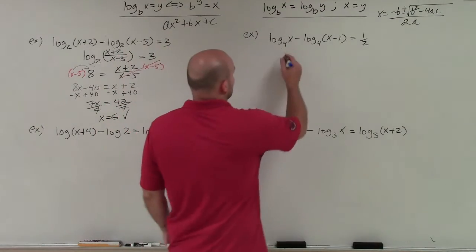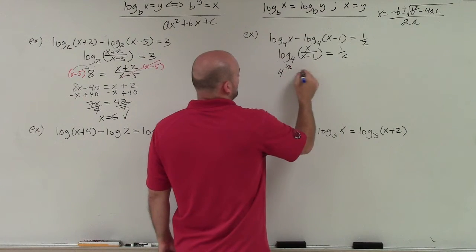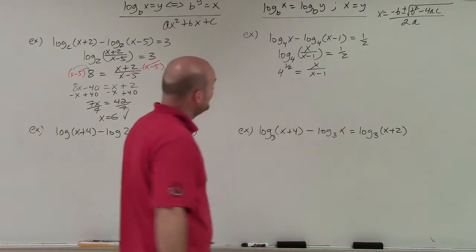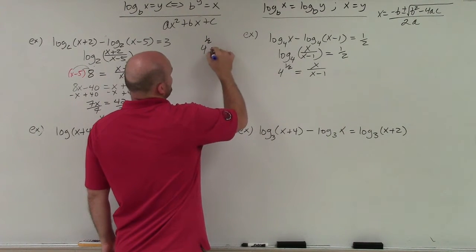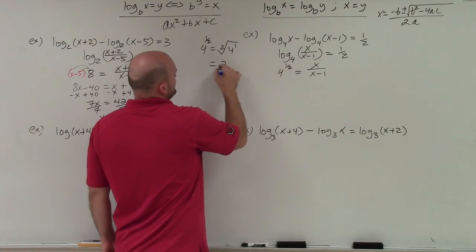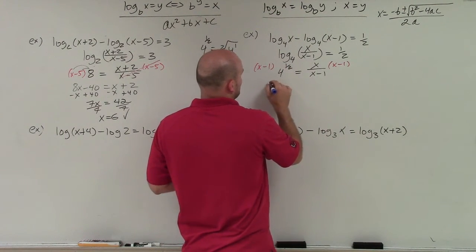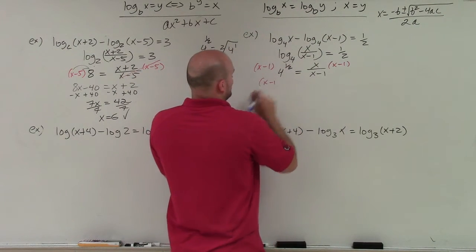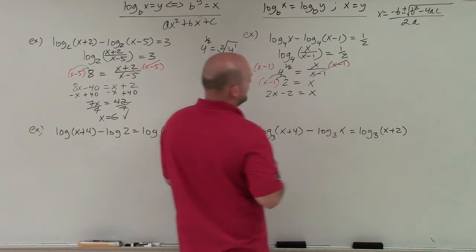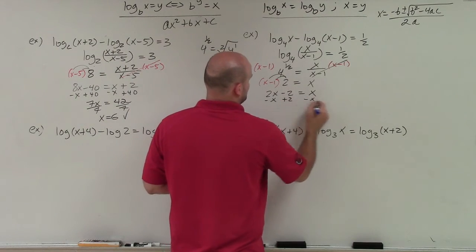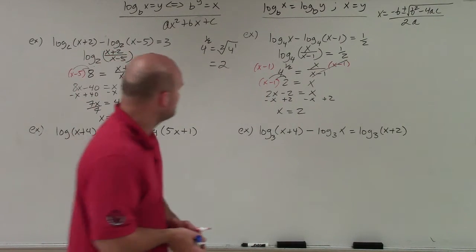On the next one, we're going to do the exact same thing. I'll just rewrite this as log base 4 of x over x minus 1 is equal to 1 half. Rewrite this in exponential form. x over x minus 1. Now, this one gets a little bit fun because, remember, 4 to the 1 half power is equal to the square root of 4 to the first power, which is just 2. So therefore, I'll multiply by x minus 1 on both sides. And I get 4 to the 1 half power is 2. So it's going to be x minus 1 times 2 equals x. Apply a distributive property. 2x minus 2 equals x. And now I can go ahead and solve. So I subtract an x, plus a 2, plus a 2. So I get x equals positive 2.